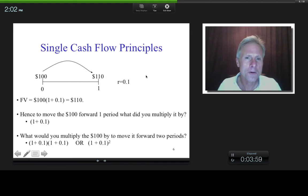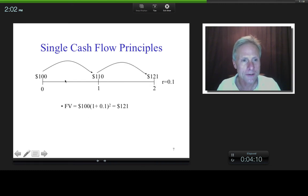So in other words, to move the $100 forward two periods, I'd be multiplying it by $1.1 the first time, $1.1 again, or $1.1 squared. Or if we see what that looks like, $100 times $1.1 gives me $110, times $1.1 again, gives me $121.